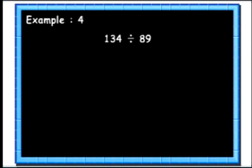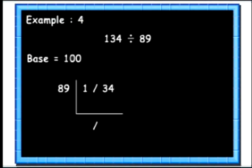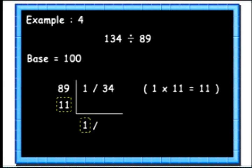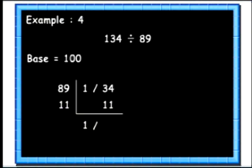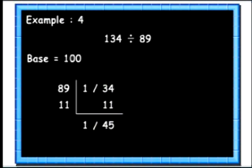Now we will take up a case of dividing a number by a 2-digit number which is close to 100. Here we will divide 134 by 89. We will take the base as 100. Since the base is 100, we will leave 2 digits from the right for the remainder stroke. 100's complement of 89 is 11. We write this 11 below 89. We bring down the first digit 1 and multiply it with the complement: 1 multiplied by 11 is 11. Finally we add up for the remainder: 34 plus 11 is 45. So we get the quotient as 1 and remainder as 45.